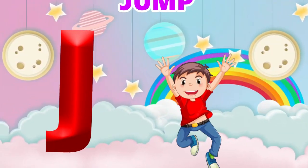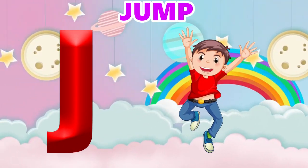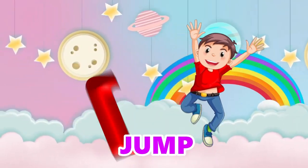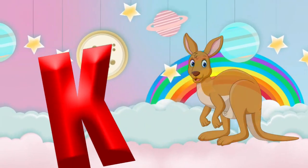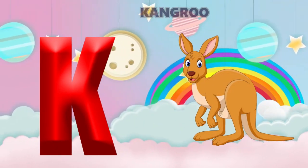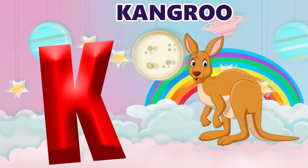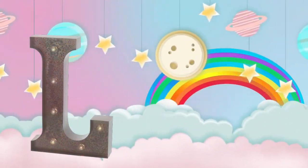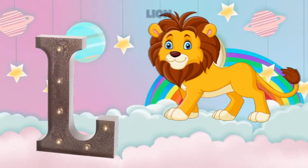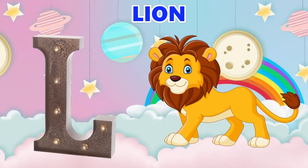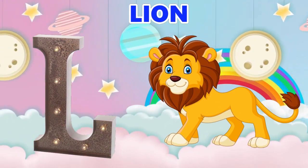J is for jump, j-j-jump. K is for kangaroo, k-k-kangaroo. L is for lion, l-l-lion.